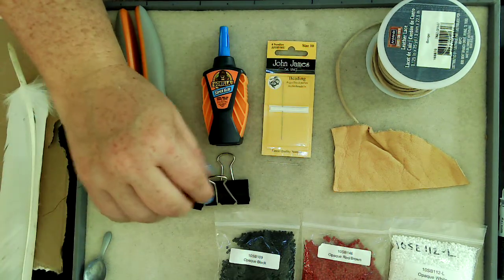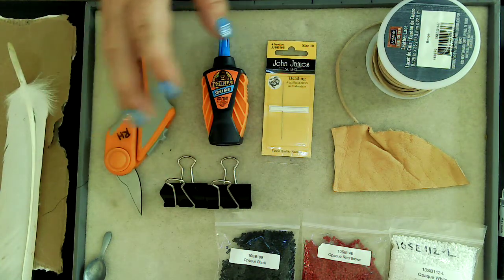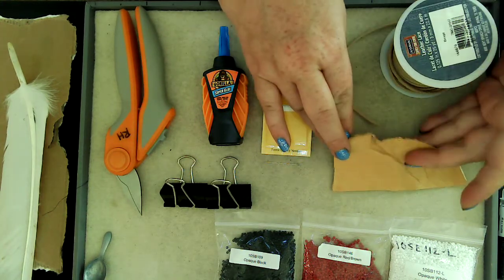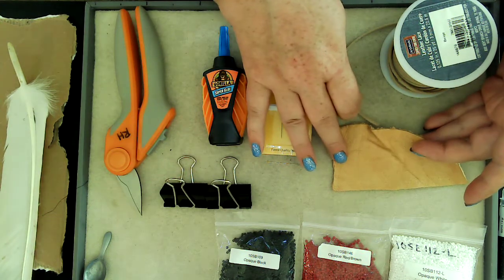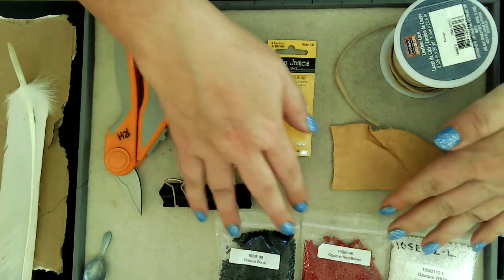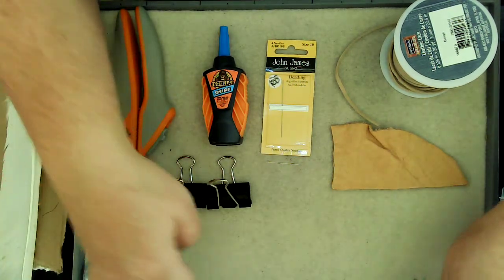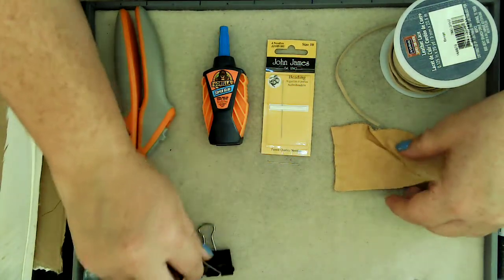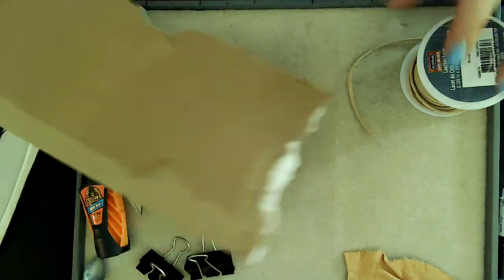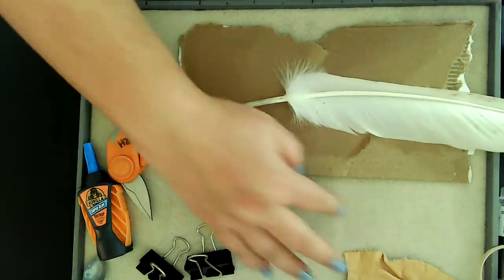The binder clips are going to help us hold the leather on while it dries. Scissors, I've got some leather lace or if you prefer you can just cut a piece of your leather off for the loop on the feather and then I've got some beads here. To get started you're going to want to protect your workspace. I've got a piece of cardboard and my feather and the leather.